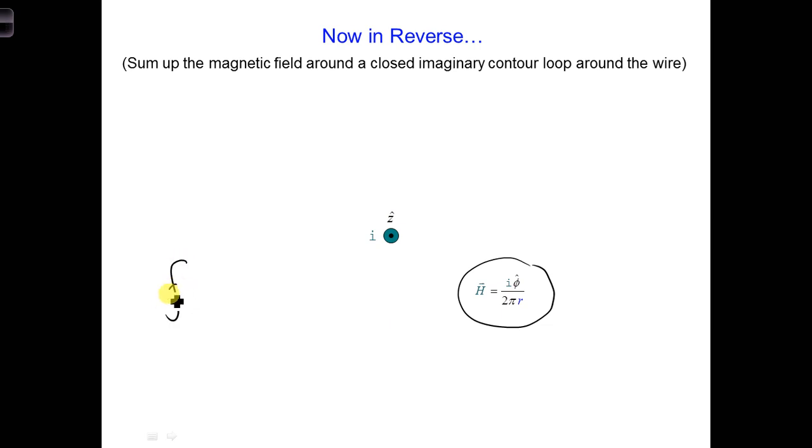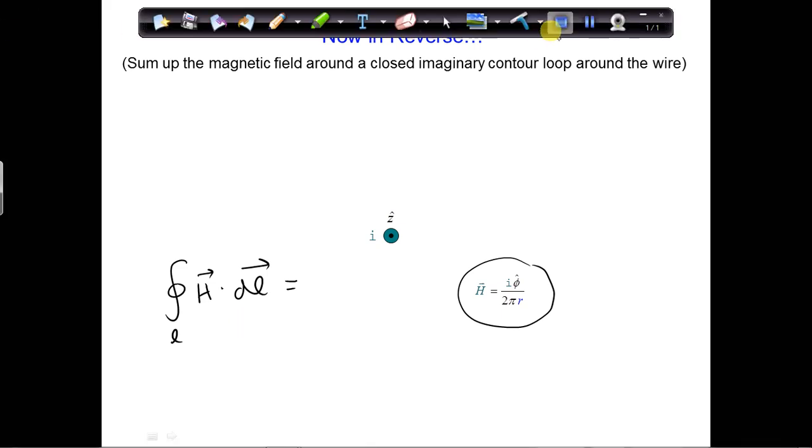So, we can write that out like this. H dot DL. This is what we want to do. And you can choose any shape you want for the integration, for the closed loop. So, choose the shape for the contour line that will make the math the easiest.